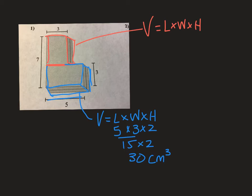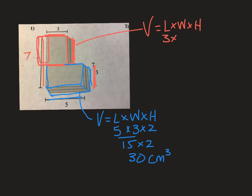30 cubic centimeters only gives me part of the volume. I've got to get back to that top rectangular prism I decomposed. Here I see the length is 3. The width — there isn't a number there. The total width for both prisms was 7, but the bottom part used for the blue prism was 3. That means the width here is 7 take away 3, or 4 centimeters.